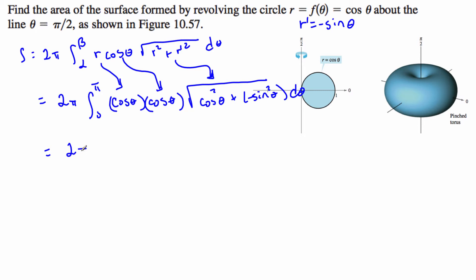So this is 2π, the integral from 0 to π of cos²(θ). Now this is the square root of cos²(θ) + sin²(θ). And I could have just recognized this is 1.